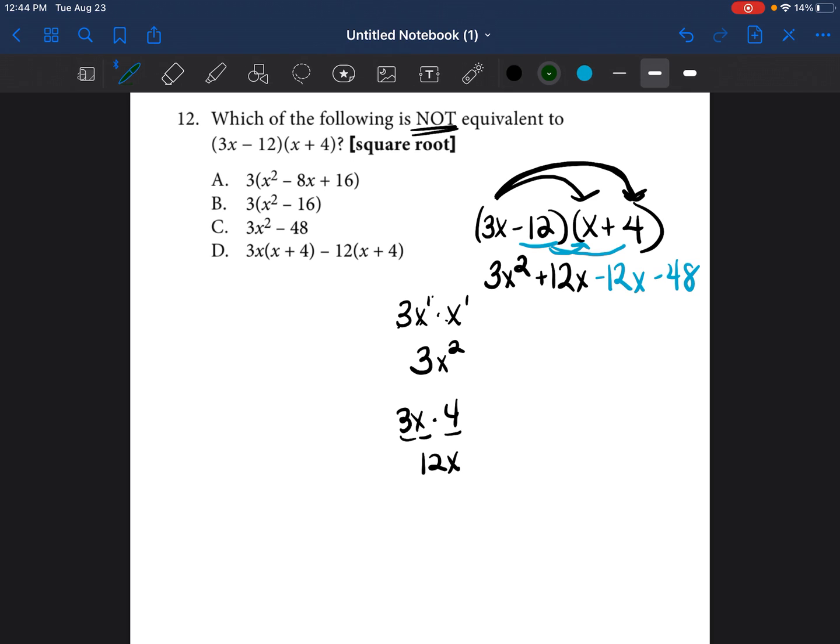Now we're going to go ahead and see if we can combine any like terms. There isn't any other term that has an x squared in it. So we're just going to bring down the 3x squared. Then we see that this and this, both of those terms, have an x in it so we can combine it. So 12x minus 12x just becomes 0.